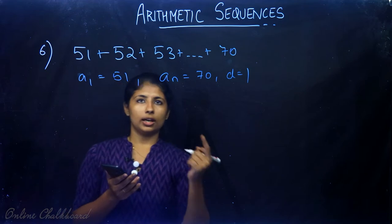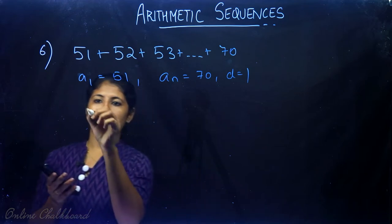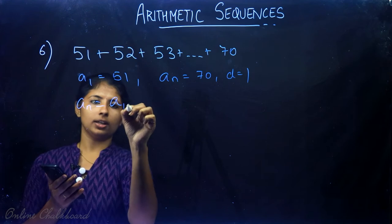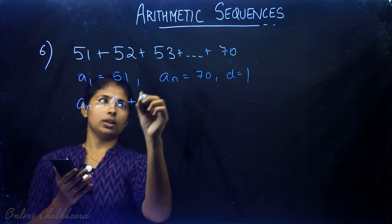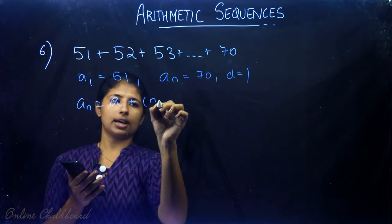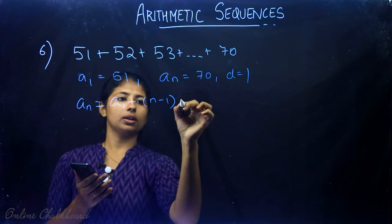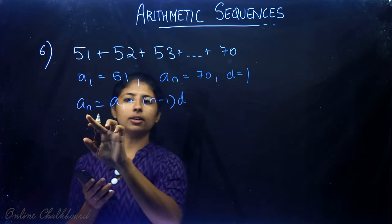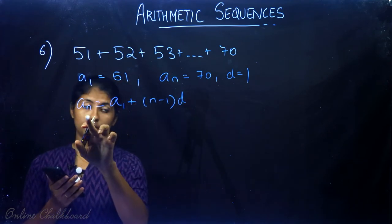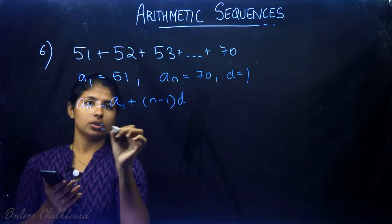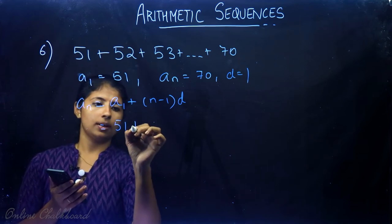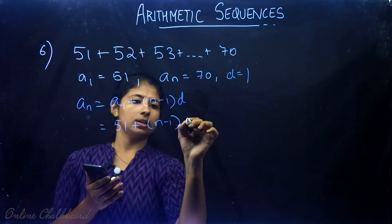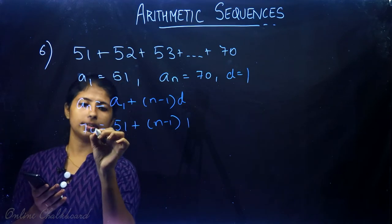Now, starting with the first term, we use the nth term formula. We can express the nth term as: a1 plus (n minus 1) times d equals the last term, so 51 plus (n minus 1) times 1 equals 70.